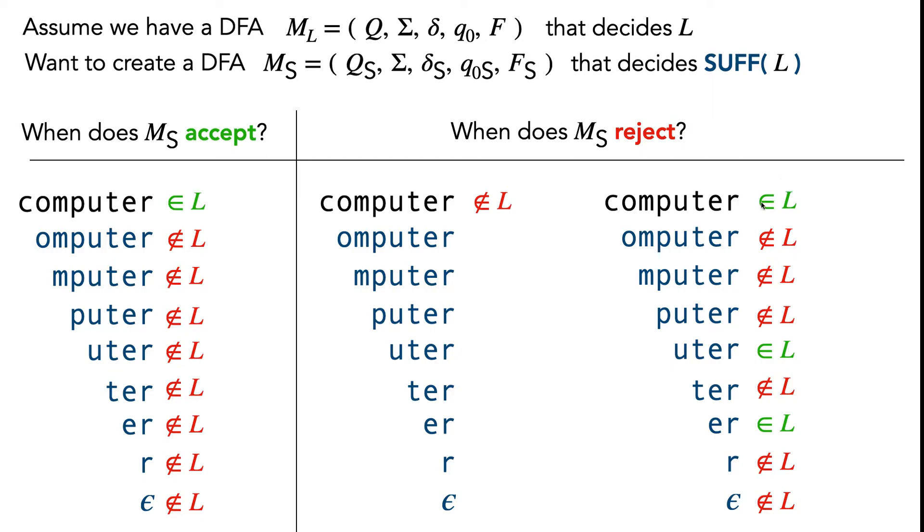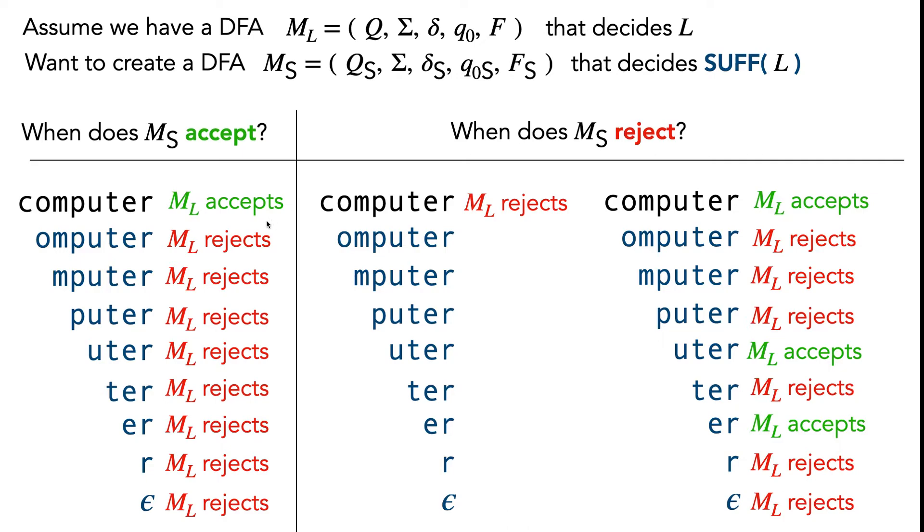Importantly, being in L or not being in L is decided by M_L. This makes it really clear that there's a nice relationship between when M_L accepts and rejects, and when we want our new machine M_S to accept and reject. This hints at the fact that when defining the 5-tuple for M_S, we're going to be reusing a lot of the components from M_L.